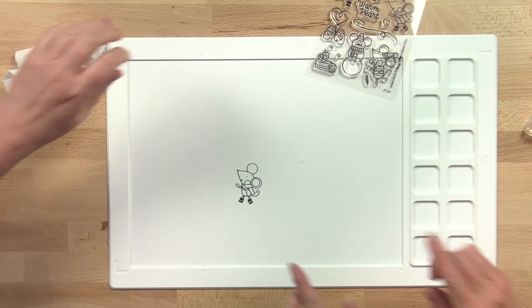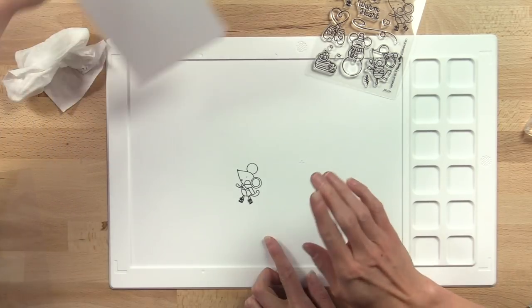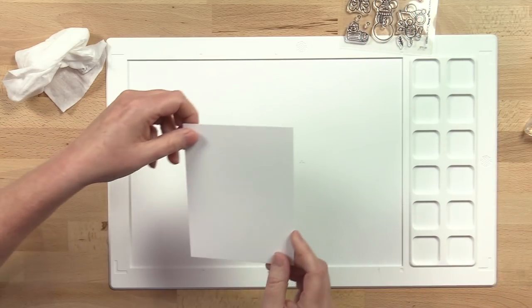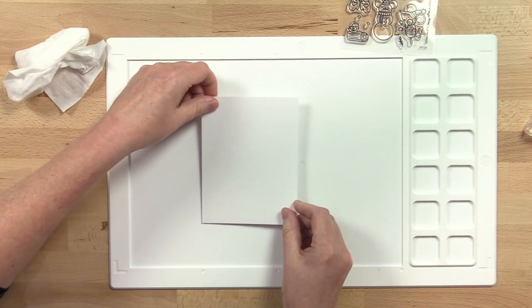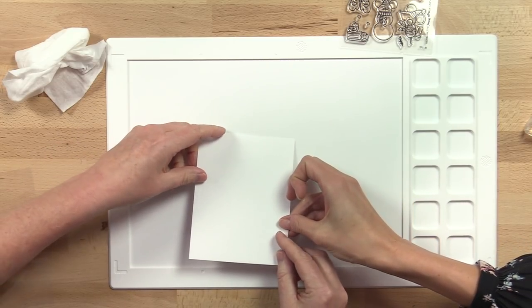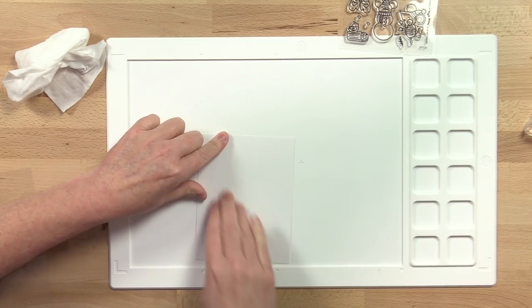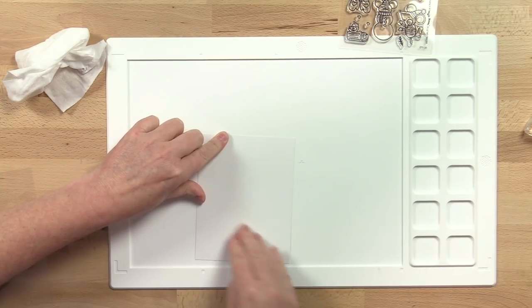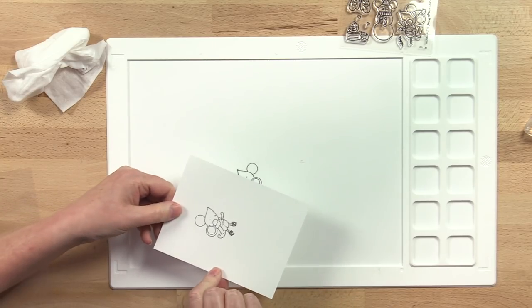And now we're going to transfer this image onto some Bristol paper for watercoloring later. We're just going to position it up higher because we have an idea, a fun card idea for this little mouse. And look, he transferred over.